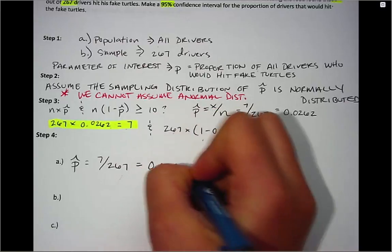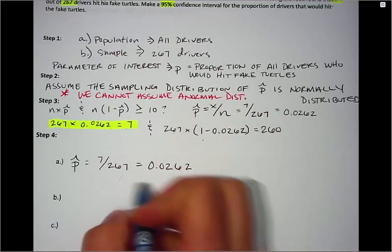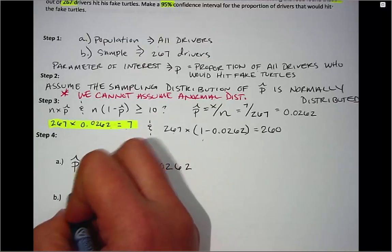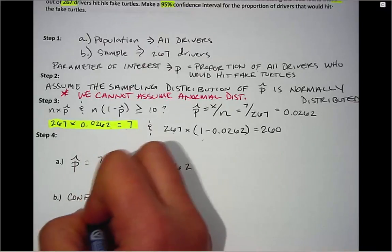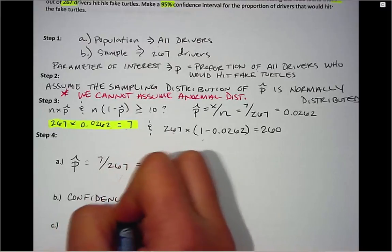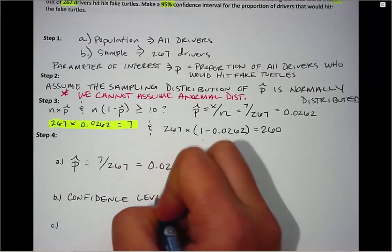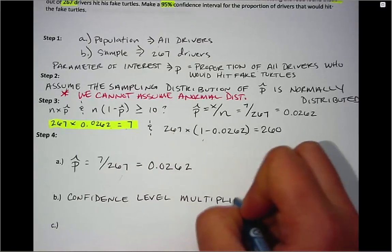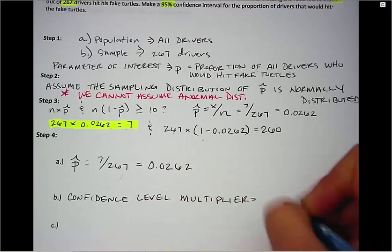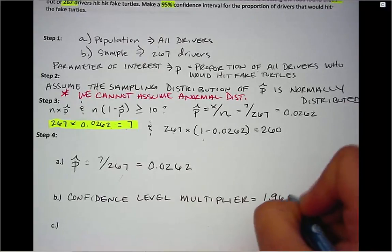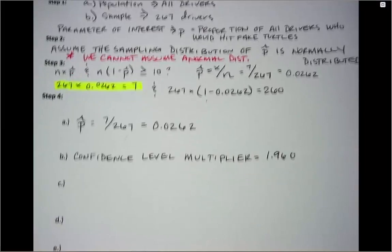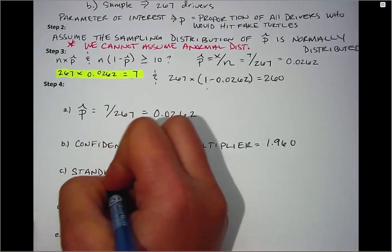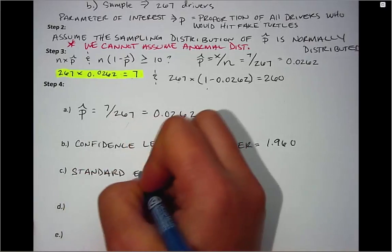The first part of step four, letter A, is to calculate P-hat, which we already did (0.0262). Then in letter B we want the confidence level multiplier. We want to be 95% confident, and if you remember the table on page three, underneath 95% the multiplier is 1.96. Then in letter C we need to calculate standard error.